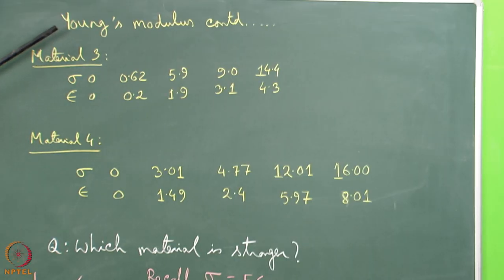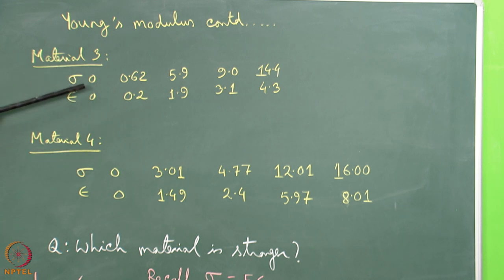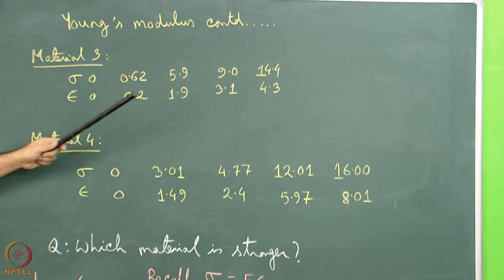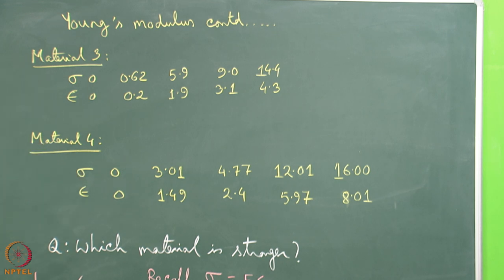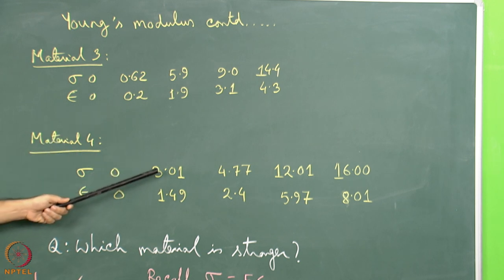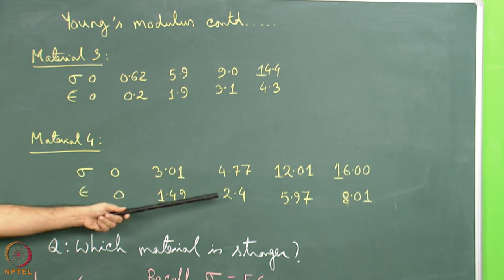Let us look at another problem involving Young's modulus. Suppose material 3 and material 4 were brought to the laboratory and different stress and strain values were found. For material 3, a linear relationship holds: stress equals approximately 3 multiplied by strain. For material 4, the relationship is stress equals approximately 2 multiplied by epsilon. So for material 3 the Young's modulus is 3 units, and for material 4 it is 2 units. Since 3 is greater than 2, material 3 is stronger than material 4.